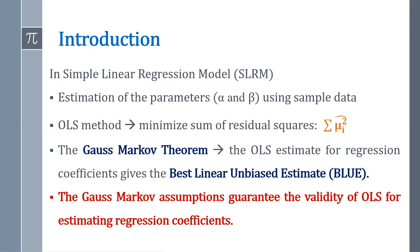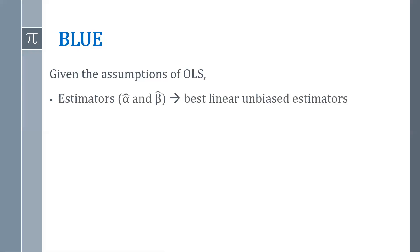Now the Gauss-Markov theorem says that the OLS estimate for regression coefficients gives the best linear unbiased estimate, that is BLUE. So basically, the Gauss-Markov assumptions guarantee the validity of OLS for estimating regression coefficients.